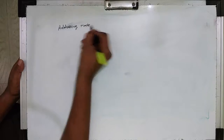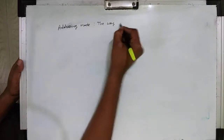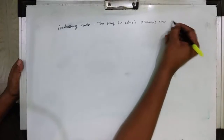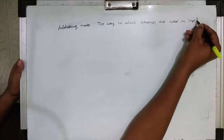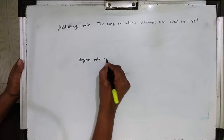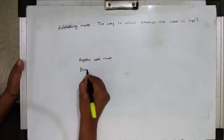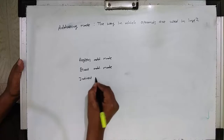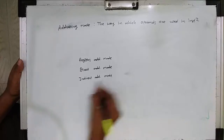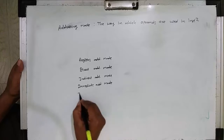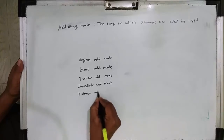Now the summary of addressing modes. Definition: the way in which operands are used in the instruction is called an addressing mode. The five types are: register addressing mode, direct addressing mode (where direct means memory location), indirect addressing mode, immediate addressing mode, and index addressing mode (base plus index register indirect addressing mode).